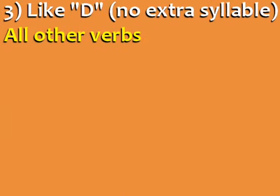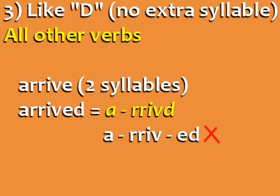Finally, ED is pronounced like D with no extra syllable in all other verbs. So the past tense of the verb ARRIVE, which has two syllables, is ARRIVED, which also has two syllables. Don't say ARRIVED — it's incorrect.